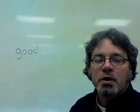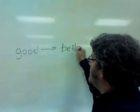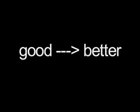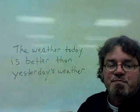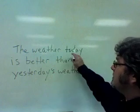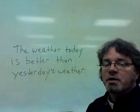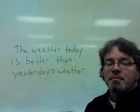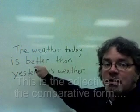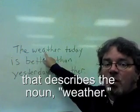When the word good is put into the comparative form, it becomes better. The weather today is better than yesterday's weather. So I'm comparing two days, today and yesterday. It's possible that the weather was good on both days, but the weather today is better. This is the adjective in the comparative form that describes the noun weather.